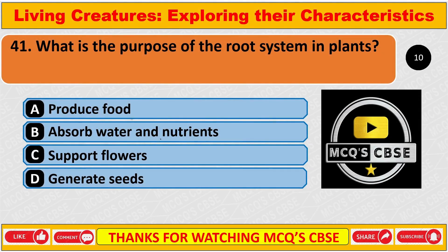What is the purpose of the root system in plants? The correct answer is B: Absorb water and nutrients.